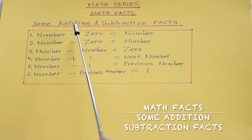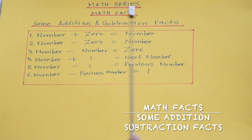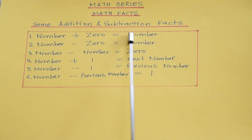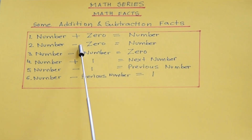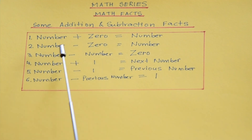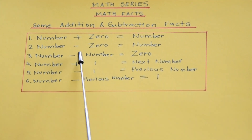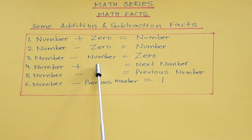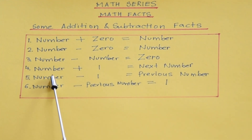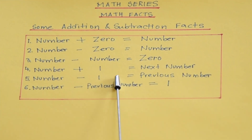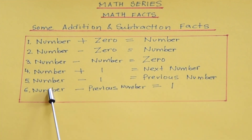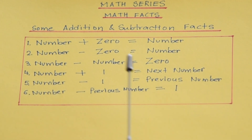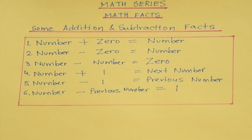Let's learn some more addition and subtraction facts. What is number plus zero? Number. Number minus zero? Number. Number minus number? Zero. Number plus one? Next number. Number minus one? Previous number. Number minus previous number? One. Let's do this in more detail.